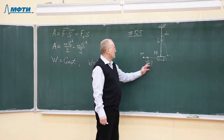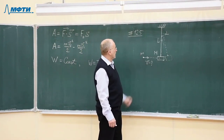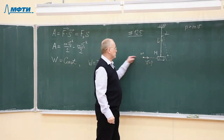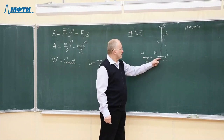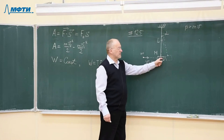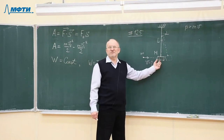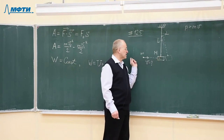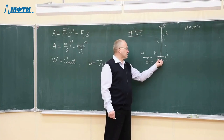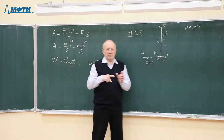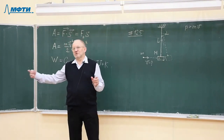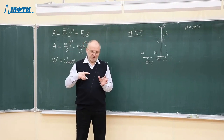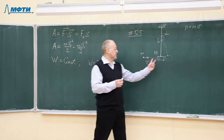How do we solve this problem using conservation laws — not only conservation of energy, but also conservation of momentum? Originally, the bullet had momentum equal to mv directed horizontally. Then the bullet hits the box and gets stuck in it. This process takes a very small interval of time because the bullet flies at high velocity — hundreds of meters per second — and penetrates the box by just a few centimeters.